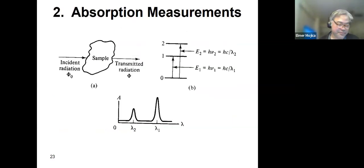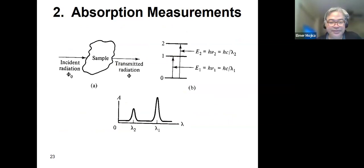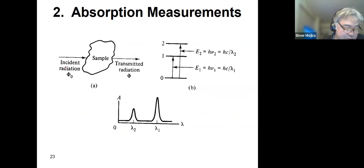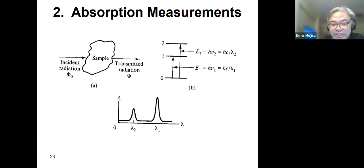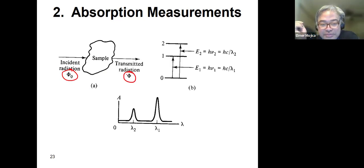Now compare it with absorption. For absorption to happen, the frequency of the incident radiation must correspond to the energy difference between the two states involved in the transition. You have incident radiation and transmitted radiation — and usually what happens is there is just absorption of light.